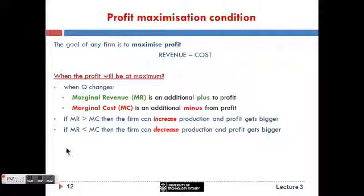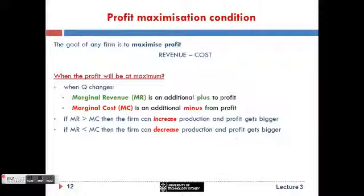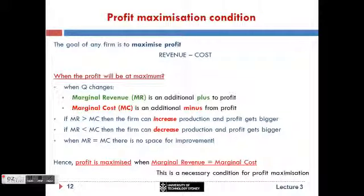Alternatively, if at the quantity the firm produces, marginal revenue is less than marginal cost, then the firm can decrease production. By decreasing production, the firm economizes on costs — marginal cost tells you how much it saves — but it also loses marginal revenue. Since the economy from marginal cost is bigger than the lost marginal revenue, profit again gets bigger. This means the optimal point cannot be in either case — only when marginal revenue equals marginal cost is there no space for improvement and profit is maximized.